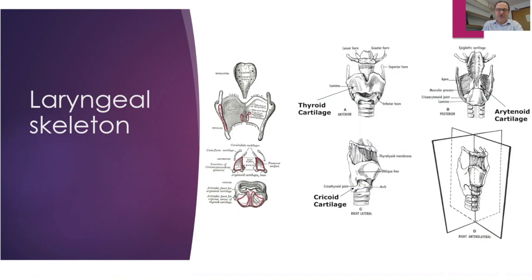The cricoid has a thin anterior arch, but posteriorly the plate can be up to two centimeters in vertical height. On top it has the articulation surface of the arytenoid cartilage. The cricoaretenoid joints have two movements: a rotatory movement that moves the vocal cord opening and closing the glottis, and an anterior-posterior rocking movement. The posterior cricoarytenoid muscle can move the arytenoid backwards, increasing tension — so it also has a tensor function.